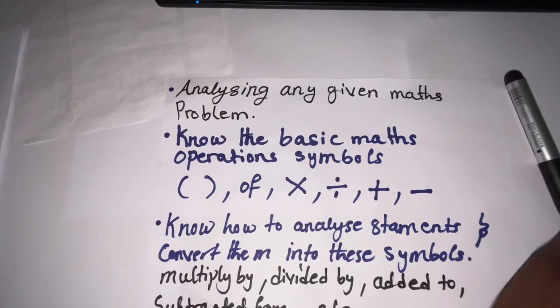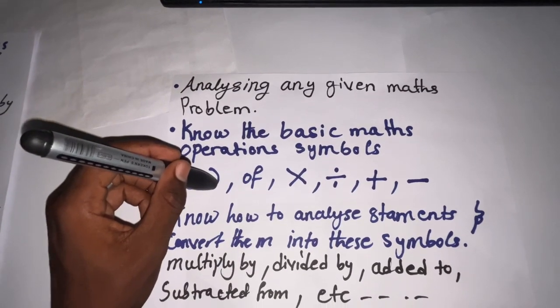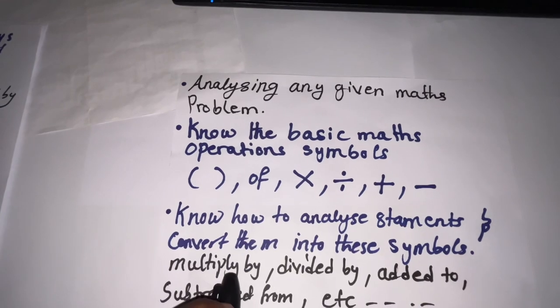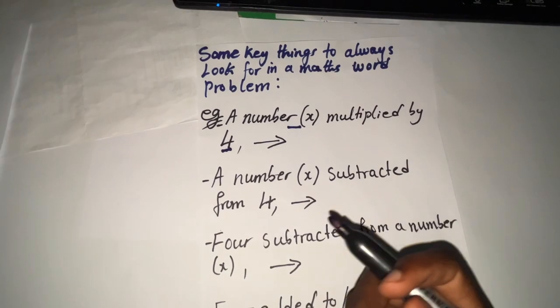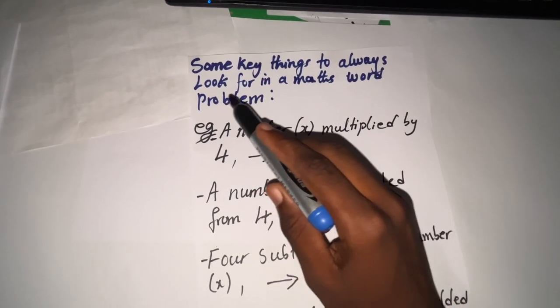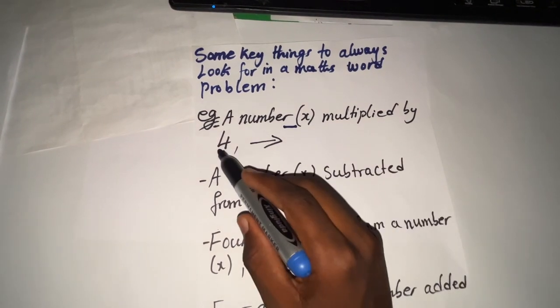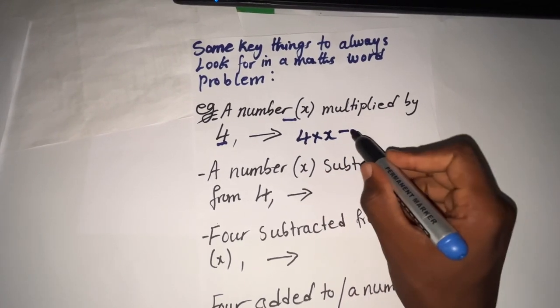In math word problems, things will be given in word form — in phrases or sentence form. You'll see things like 'multiply by,' 'divide by,' 'added to,' and so on. You should know how to analyze statements and convert them into symbols. The first example reads: 'a number x multiplied by 4.' This can simply be analyzed as 4 times that particular number x, which gives us 4x.